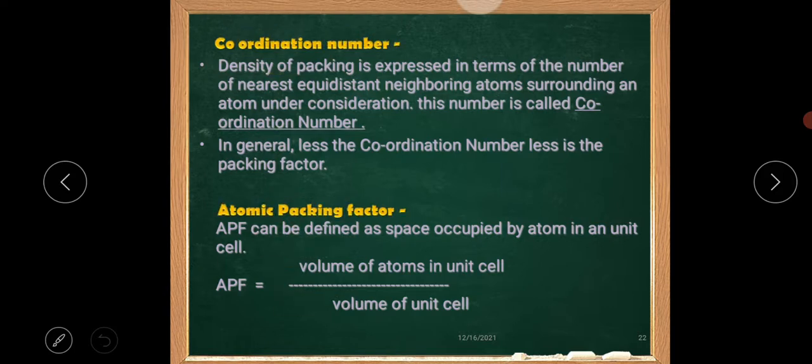Density of coordination number. Density of packing is expressed in terms of the number of nearest equidistance neighboring atoms surrounding an atom under consideration. This number is called coordination number. In general, less coordination number, less is the packing factor.